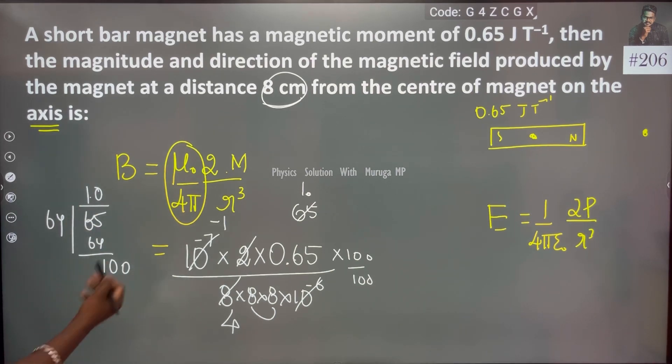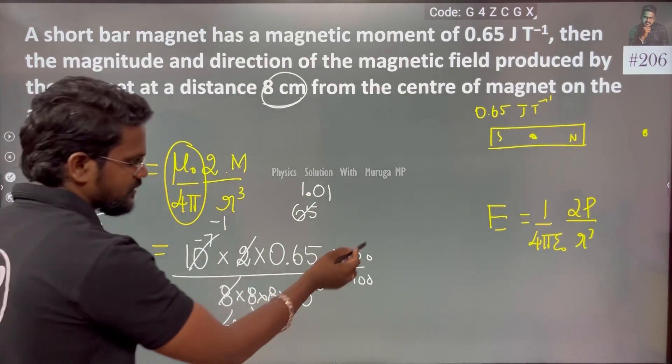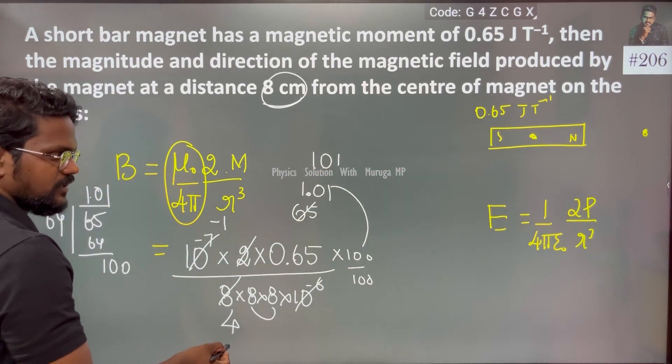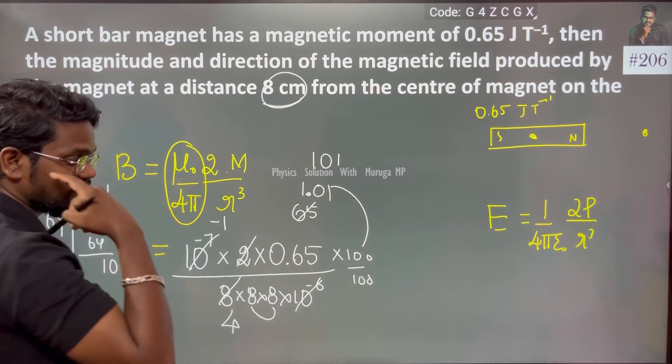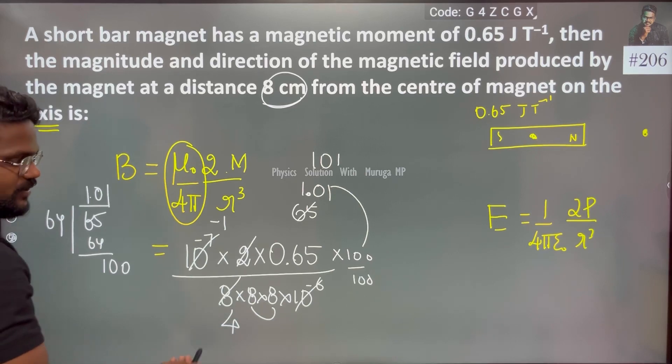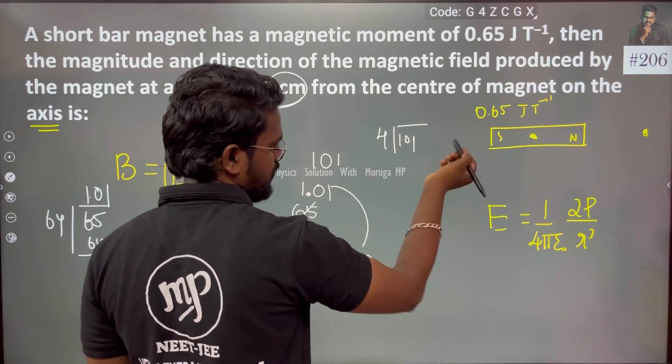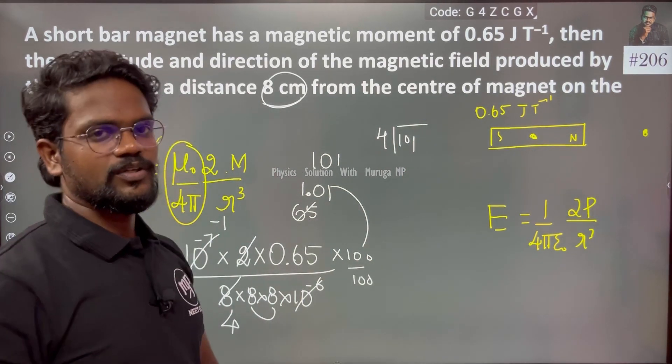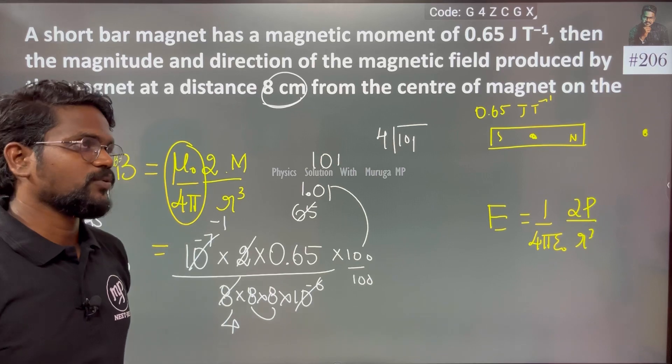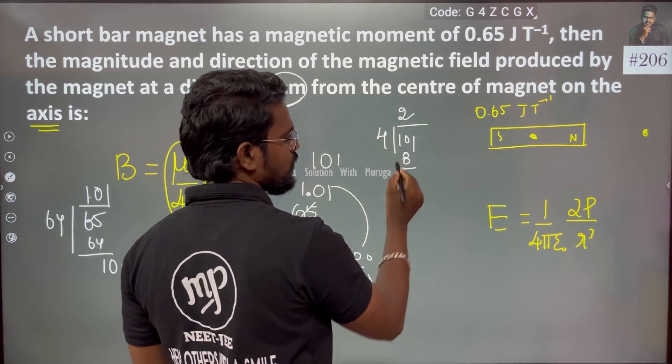This is 64 times so 1.01. So if I multiply with this 100, the whole term becomes 101, right. This is 4, this is 100. So if I multiply with this I am trying to cancel, 4 this is 101, I am trying to cancel. We will go with 2 times, so 2 times this is 8, 21, 5, 5 times 20.